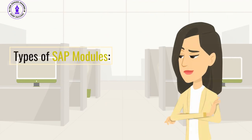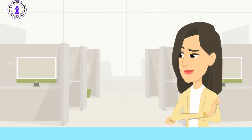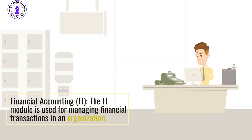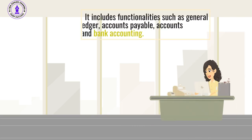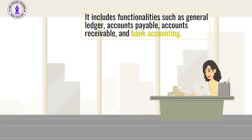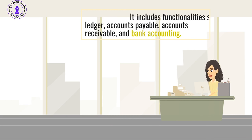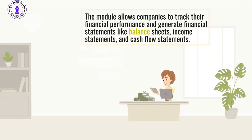Types of SAP Modules. Financial Accounting: The FI module is used for managing financial transactions in an organization. It includes functionalities such as general ledger, accounts payable, accounts receivable, and bank accounting. The module allows companies to track their financial performance and generate financial statements like balance sheets, income statements, and cash flow statements.